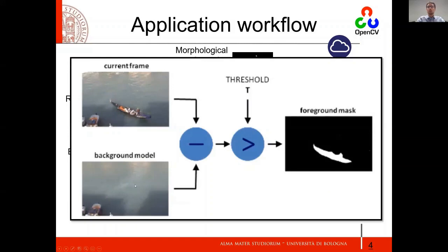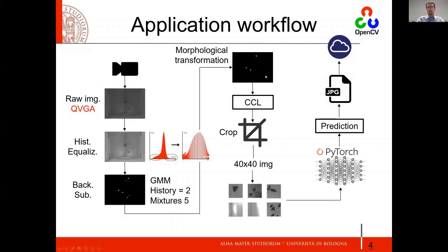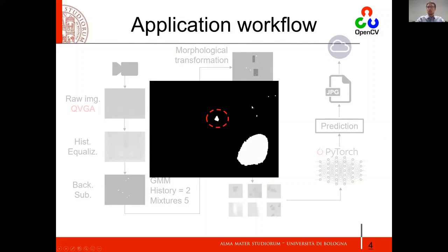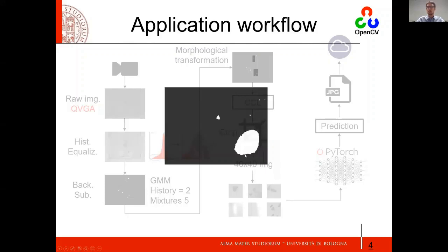Let's go deeper on the GMM. Basically, we have a background model built using two images as history, and we subtract the current frame, applying a foreground mask, so we can detect if something changed between previous images. The morphological transformations are basically filters used to remove objects too small to be an insect — which is noise — and objects too big to be an insect. This removes useless information from the image.